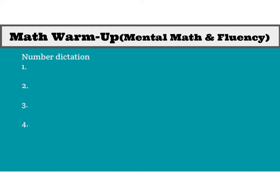The first number is 37,124. I'll say that one more time: 37,124. Write the number and circle the thousands digit. Underline the ones digit.